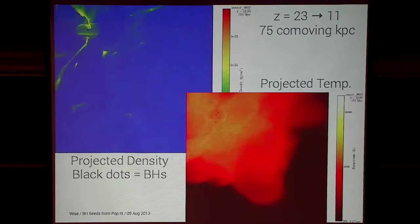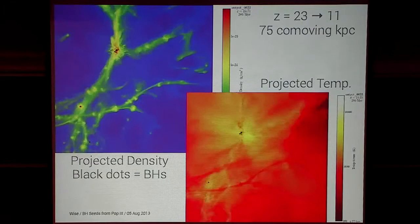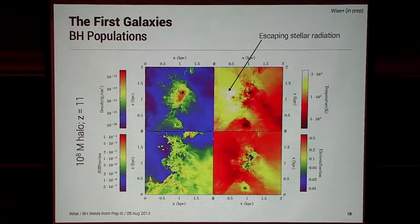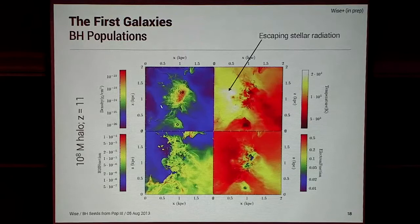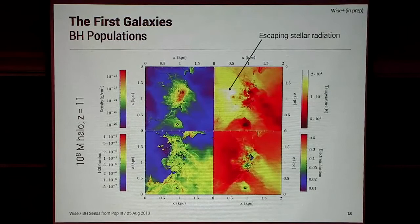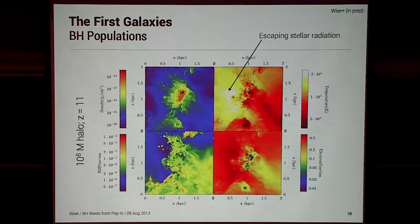Taking a closer look at a zoom-in of a 10^8 solar mass halo at redshift 11, the black holes are orbiting around in the ISM. This galaxy doesn't have a central black hole because the most massive progenitor had a supernova — possibly a pair-instability supernova — so there was no black hole remnant. Most of the high-temperature region is being created by stellar radiation escaping into the IGM and contributing to reionization.